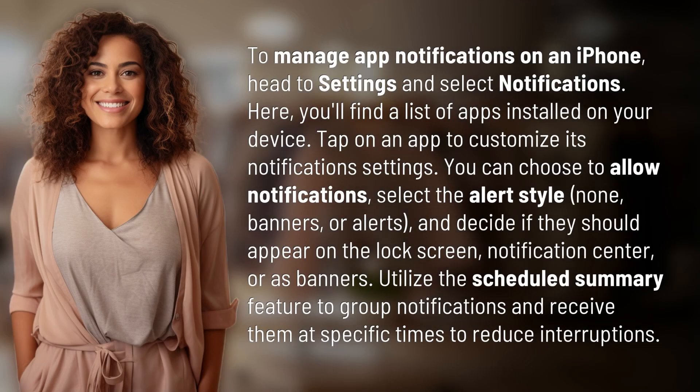To manage app notifications on an iPhone, head to Settings and select Notifications. Here, you'll find a list of apps installed on your device. Tap on an app to customize its notification settings.